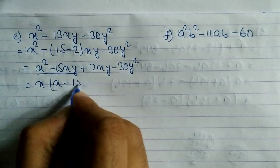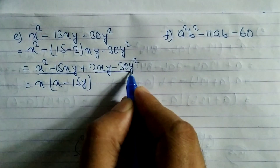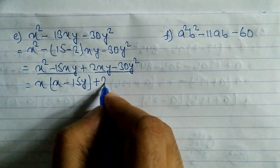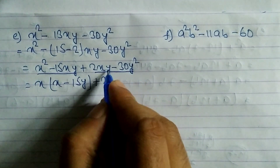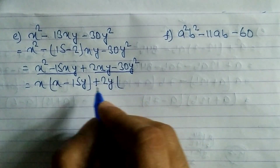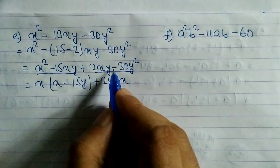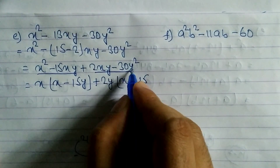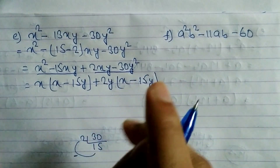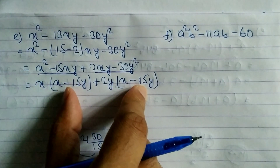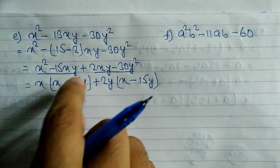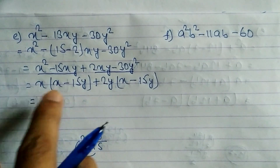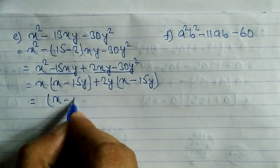From the last two terms, 2y is common: 2y(x - 15y). Keep in mind that both bracket expressions (x - 15y) must be the same — if they are, your calculation is correct; otherwise there is a mistake. Now take (x - 15y) as common.